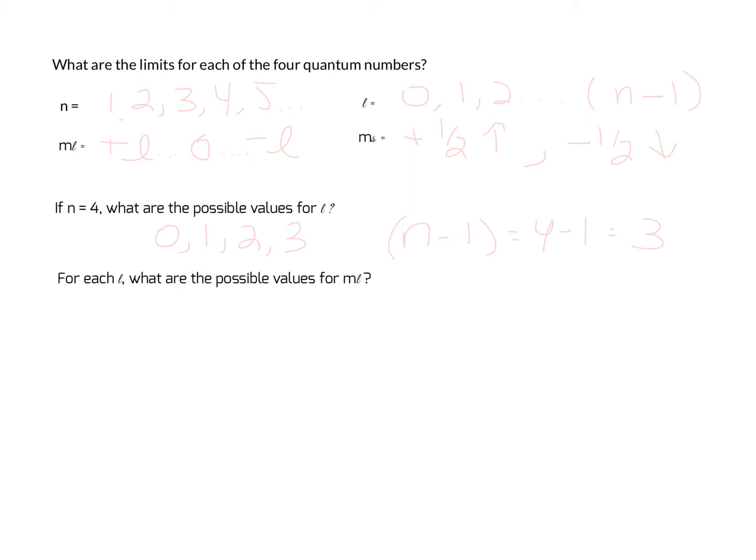Our next question is, for each l, what are the possible values for m sub l? Well, when l equals 0, we've only got one choice: m sub l equals 0. However, when l equals 1, m sub l can either be equal to plus 1, 0, or minus 1.